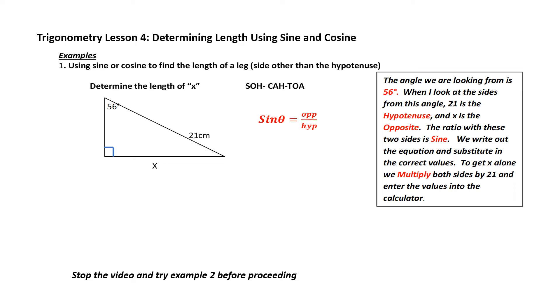Trigonometry lesson four: determining the length using sine and cosine. Example number one — use sine and cosine to find the length of a leg, a side that's other than the hypotenuse.